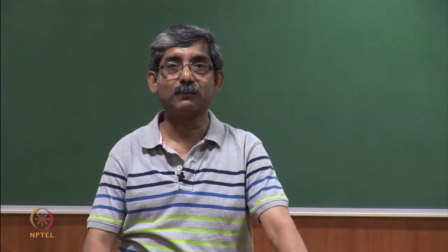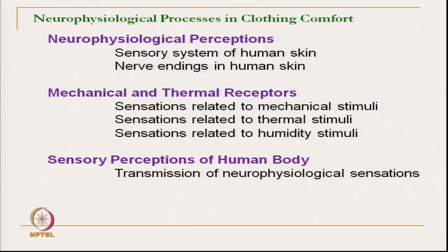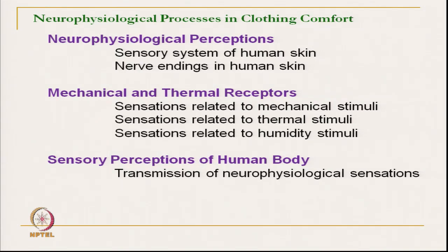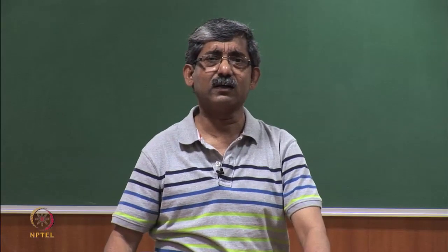Mainly two types of sensors are there: one is mechanical sensor and thermal sensor. For humidity stimulation, there is no specific sensor available — those aspects we have discussed. Then sensory perception of the human body, how the sense is transmitted to our brain, how the brain reacts — those parts we have discussed, along with the physiological requirement of the human body. There are metabolic heat and body temperature, and how metabolic heat is lost and what are the phenomena of sweating — all of this we have discussed, which are directly related to the comfort of humans.